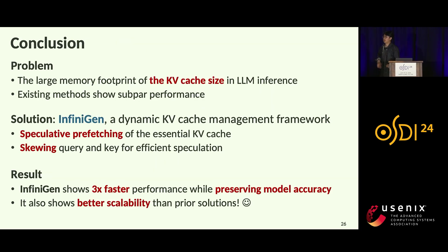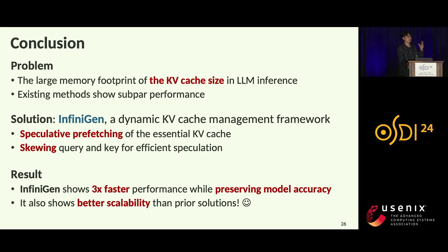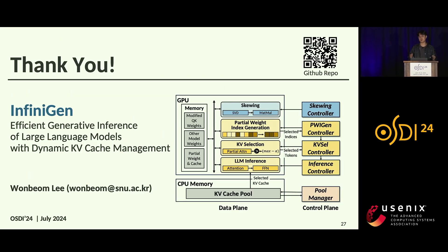To conclude, we addressed the problem of key-value cache size in LLM inference. Our solution, InfiniGEN, is a dynamic KV cache management framework. By speculatively prefetching only essential tokens with the support of a key-query screen, InfiniGEN achieves up to 3x faster performance while preserving model accuracy, and shows better scalability than prior solutions. Thank you for listening — I'm happy to take questions.